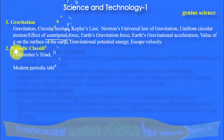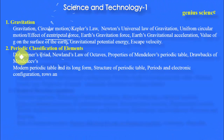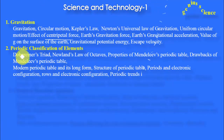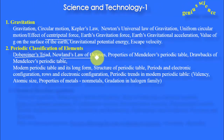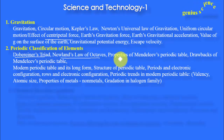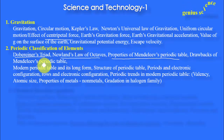The next chapter is Periodic Classification of Elements. This chapter is also important for 12th class as well as for NEET and other examinations. In this chapter, Dobereiner's triads, Newlands' law of octaves — these definitions and laws we must remember. Also the properties of Mendeleev's periodic table, drawbacks of Mendeleev's periodic table, as well as the merits of Mendeleev's periodic table.